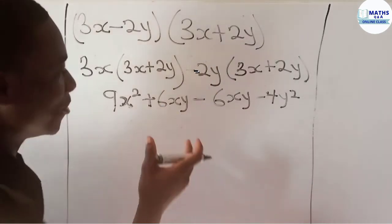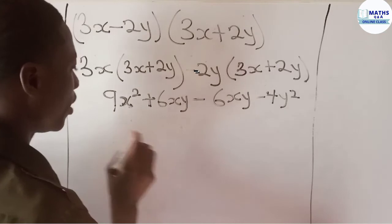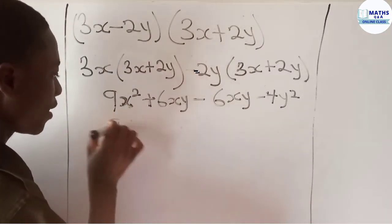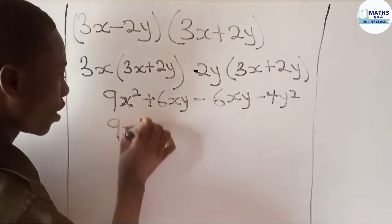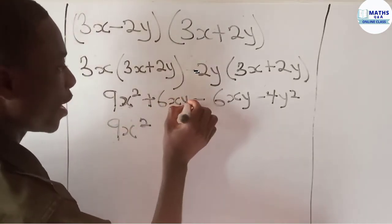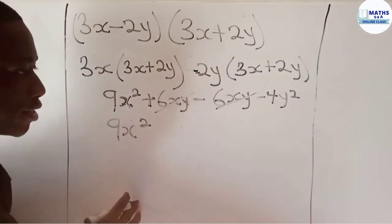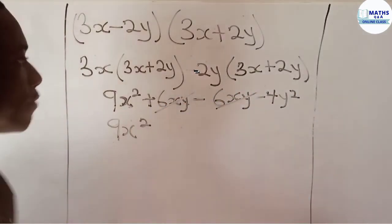So you just solve it right away. You have 9x squared, and then this is 6xy minus 6xy, so this one becomes 0, right? Good.